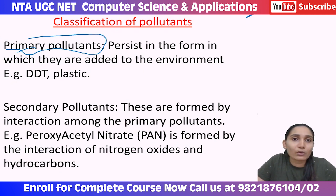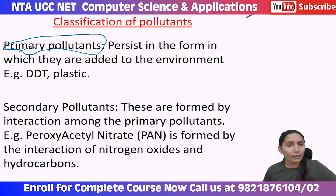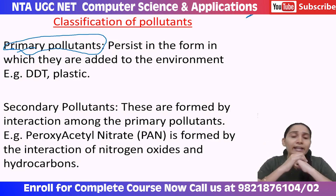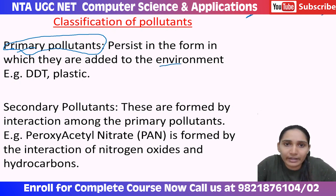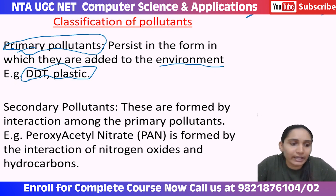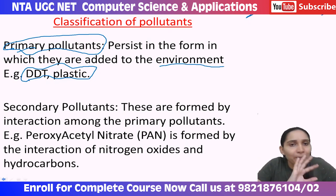Primary pollutants are those that persist in the form in which they are added to the environment — that is, the addition of those materials into the environment itself causes pollution. They are pollutants in the form in which they are released. Examples include DDT and plastic. When you throw plastic waste into the environment, that plastic waste itself, in its original form, is a pollutant.